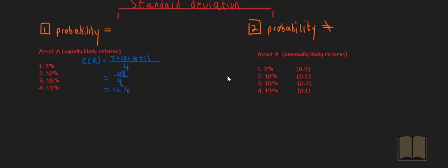Now to calculate the risk associated with asset A — in other words, the standard deviation — you first need to calculate the variance. You calculate the variance by taking the squared deviations of each data point from the expected return. So it's the difference between the data point of 7% minus the expected return of 12%, squared. Then 10 minus 12 squared, 18 minus 12 squared, and 13 minus 12 squared.